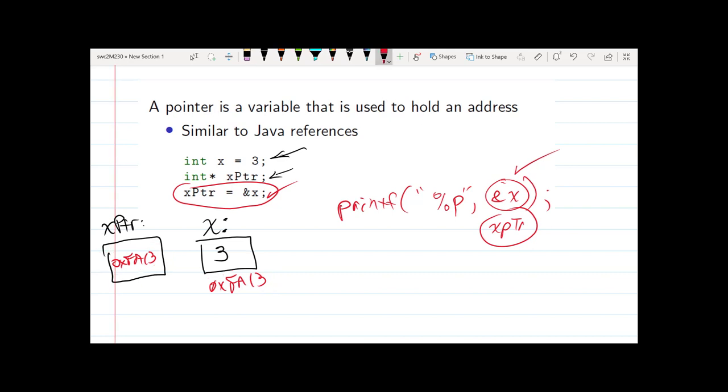Now, this xptr variable, this pointer variable, which is initialized using the asterisk here, is different than how you would declare an integer. So that asterisk is how you indicate that the variable is a pointer type. So this is kind of an int pointer xptr, the way that this is an int x.